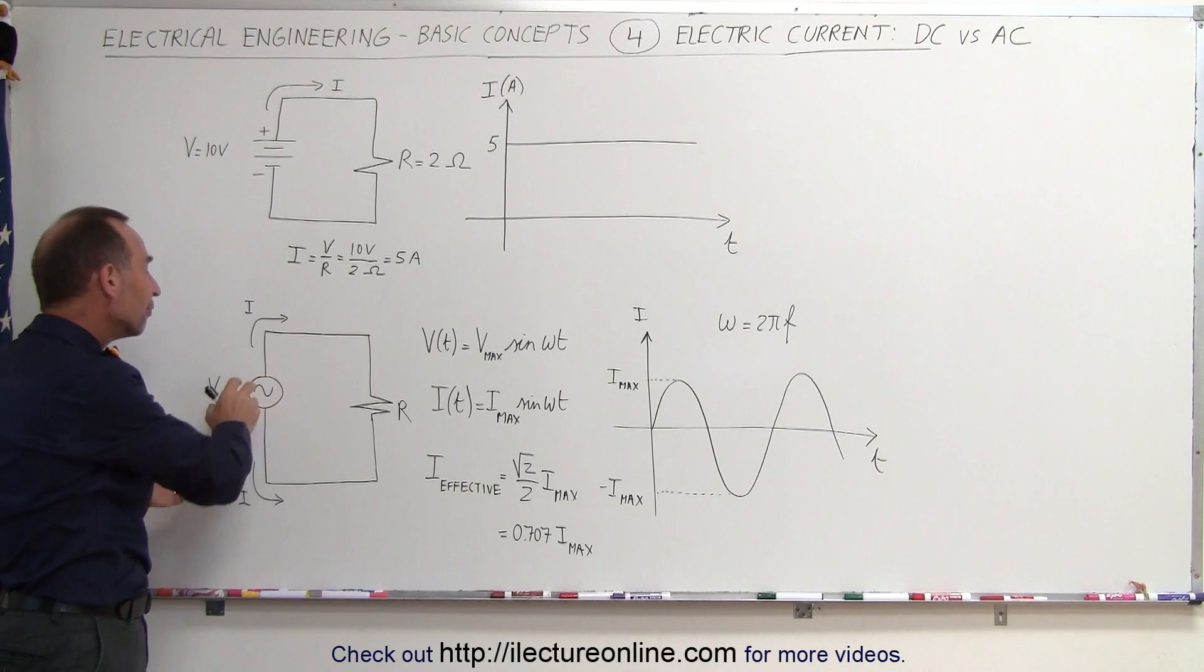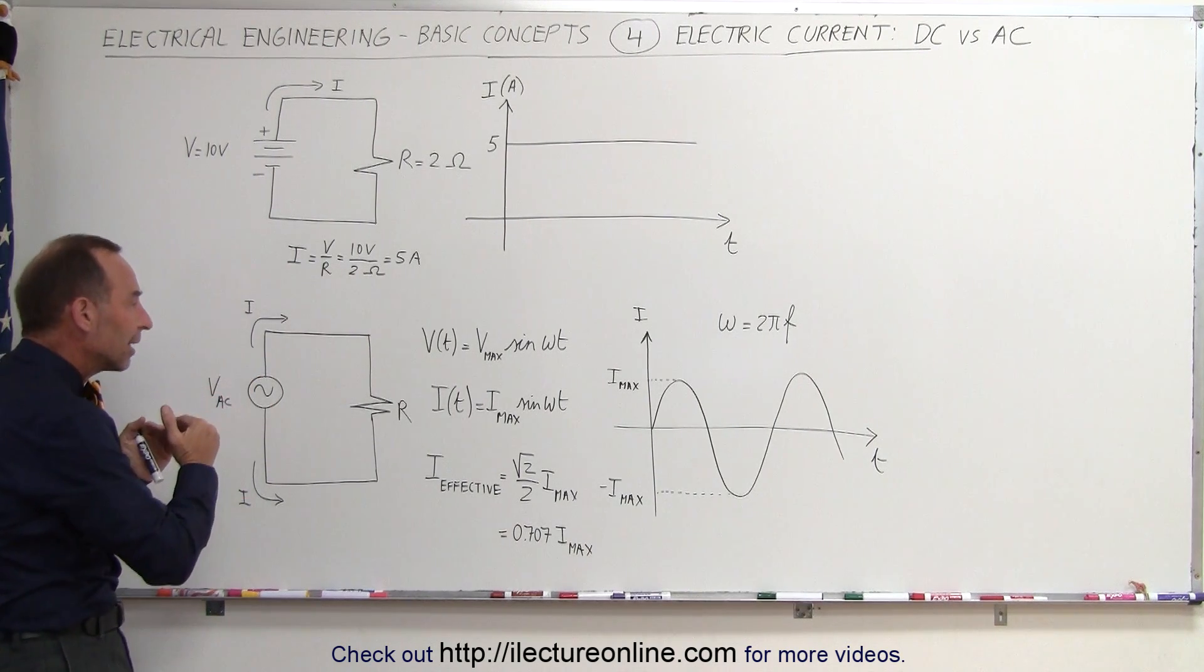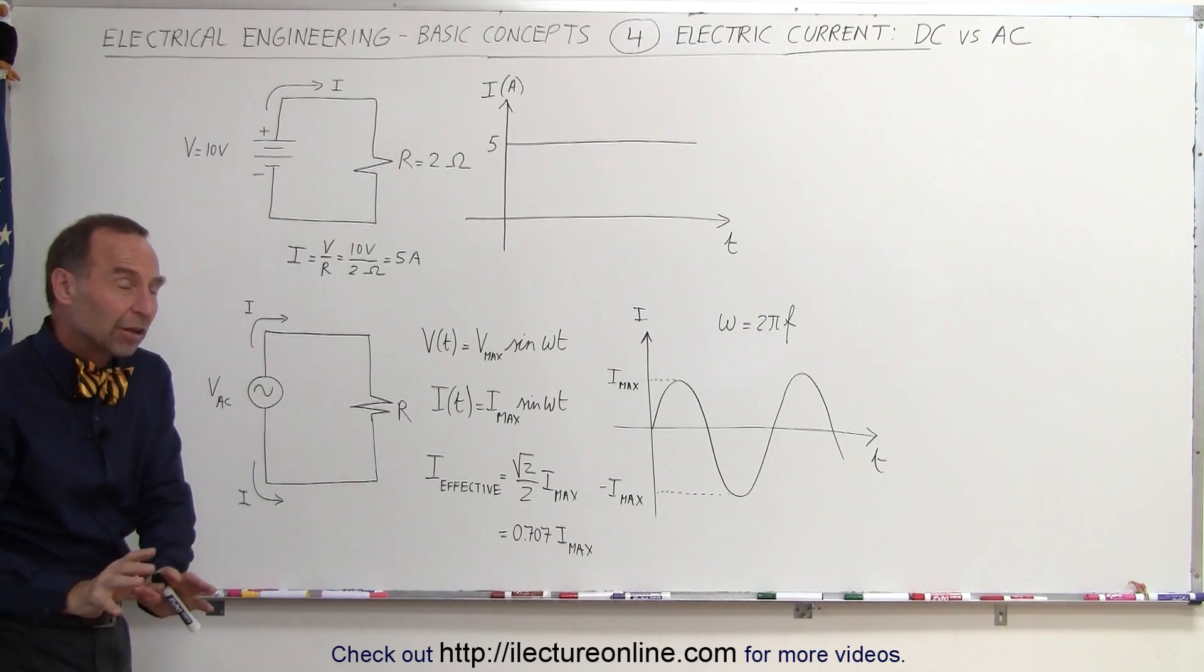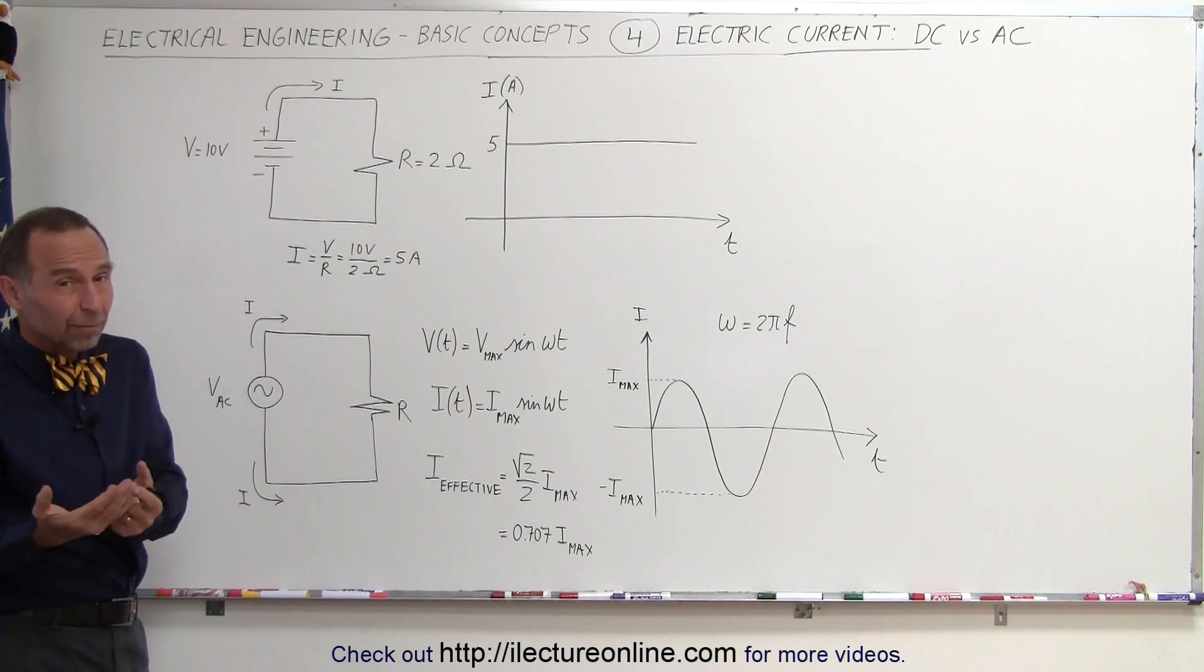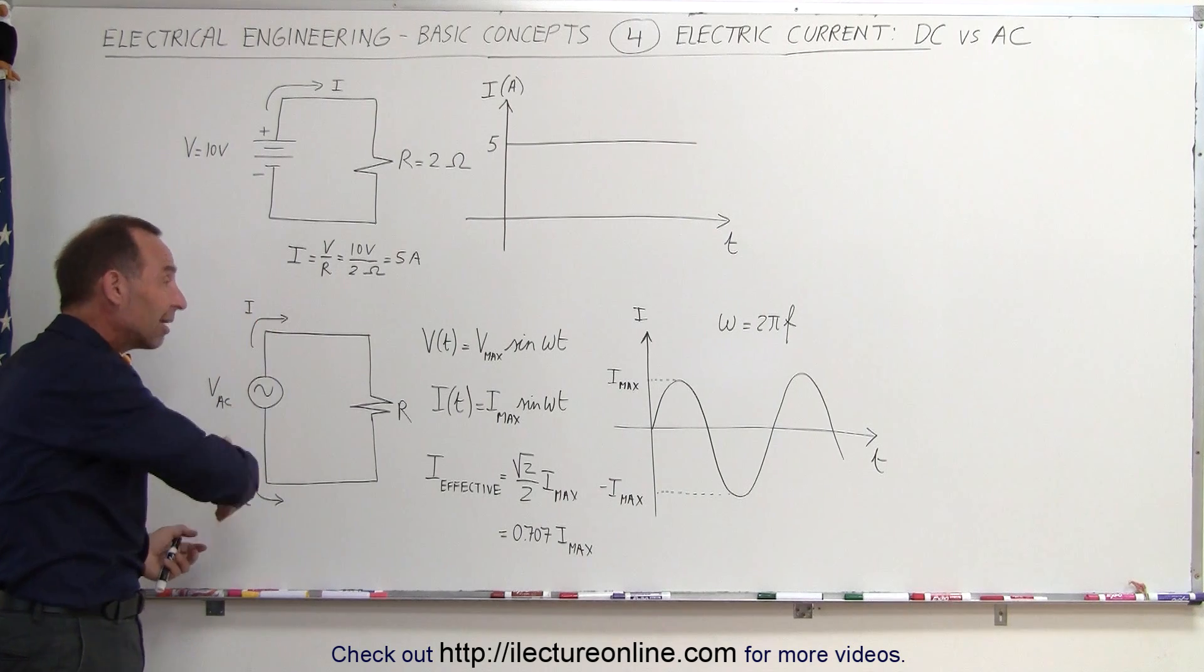Now notice that when you have an alternating voltage source, basically what you're doing is, at some moments in time you're pushing electrons in one direction, at other points in time you're pushing electrons in the other direction. Of course, since current is opposite of the electron flow, it still doesn't matter. You still have current flowing in one direction and then in the other direction as time goes on.